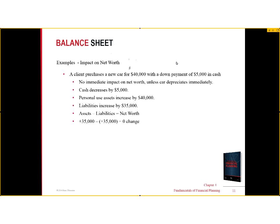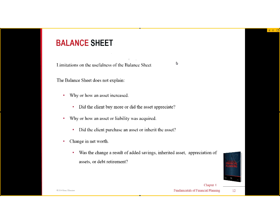A client purchases a new car for $40,000 with a down payment of $5,000 in cash — we'll assume the car is still worth $40,000. Cash goes down by $5,000; the car as another type of asset goes up by $40,000, so there's a net increase in assets of $35,000. There's also an increase in liabilities of $35,000. Those offset each other, so there's no change in net worth.